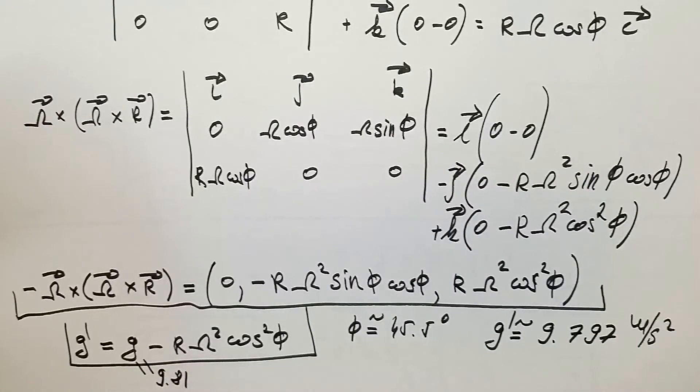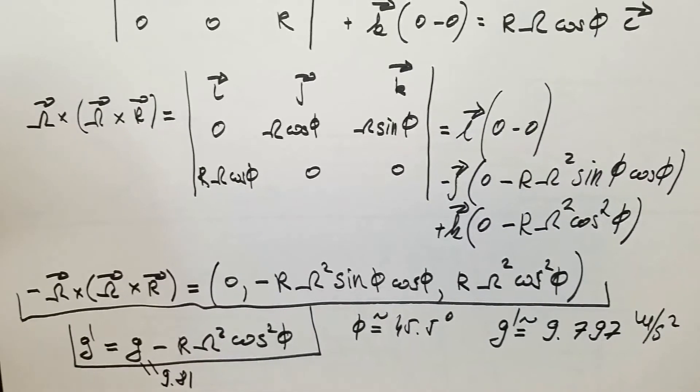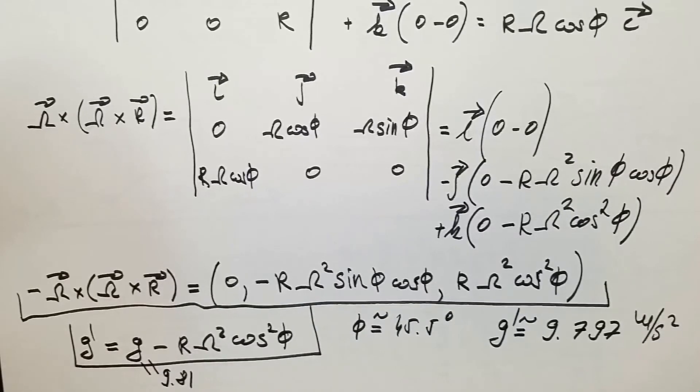This result also means that if you are not happy with your weight but you don't feel like taking some strict diet, you can take your scale to equator, and your weight on equator will be smaller for the value R omega squared cosine squared phi.